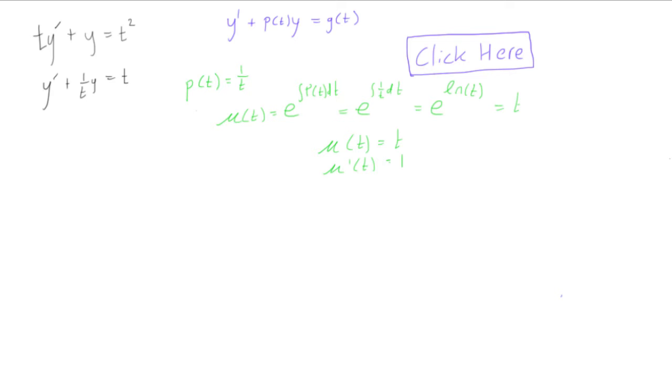All right, so let's go back to the original problem. And now that we know this, we want to multiply mu of t to every term. So we have mu of t, which is equal to t. So we have t y prime plus t times 1 over t y is equal to t times t. Right, just like that.